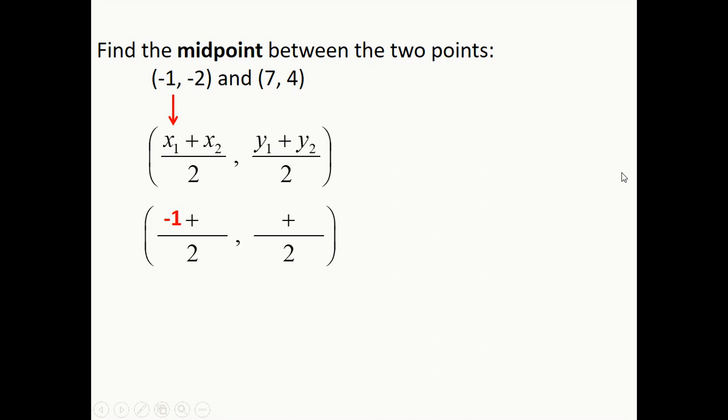So all we got to do is start taking those numbers and putting them in the right spots. x1 becomes negative one, x2 becomes seven, y1 becomes negative two, and y2 becomes four. Once we have that, then we have some simple arithmetic to do. Negative one plus seven is six, divided by two is three. Negative two plus four is two, divided by two is one. So the coordinates of the midpoint are three comma one. That's how we use that formula.